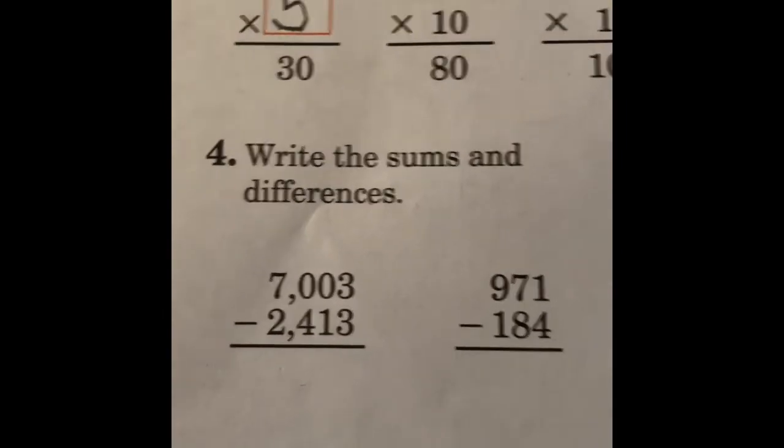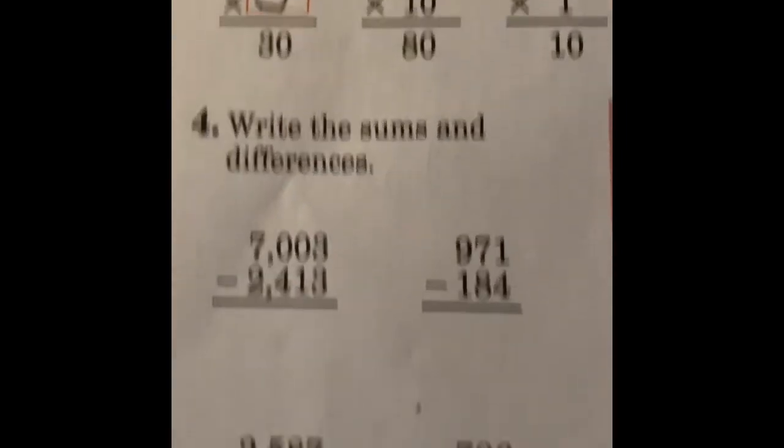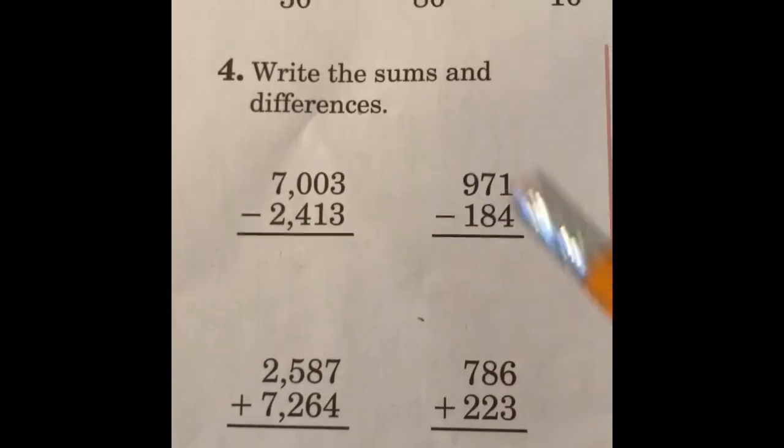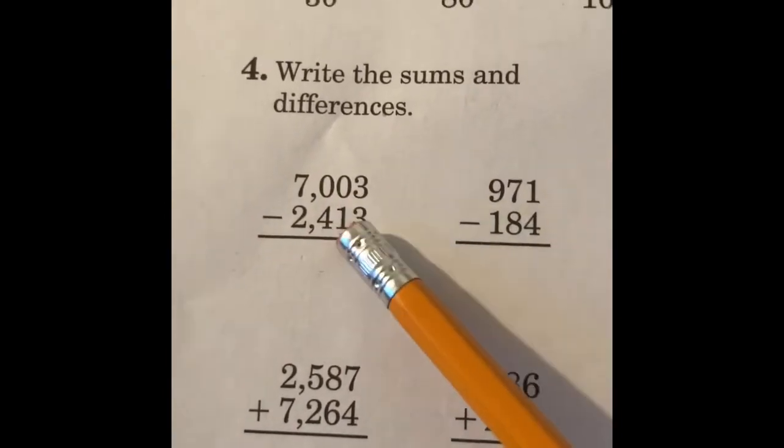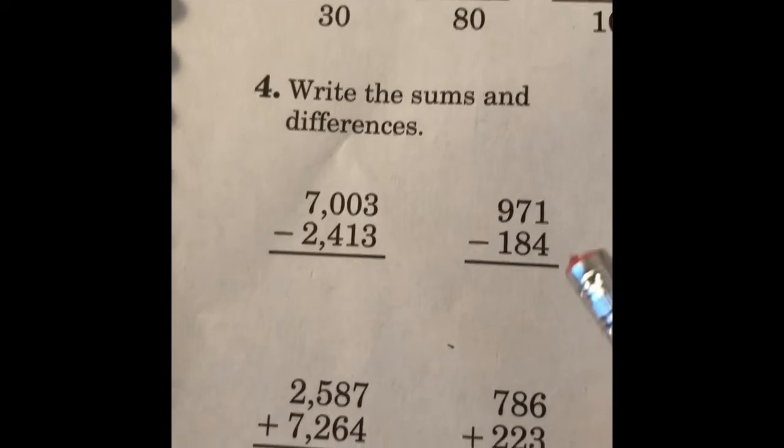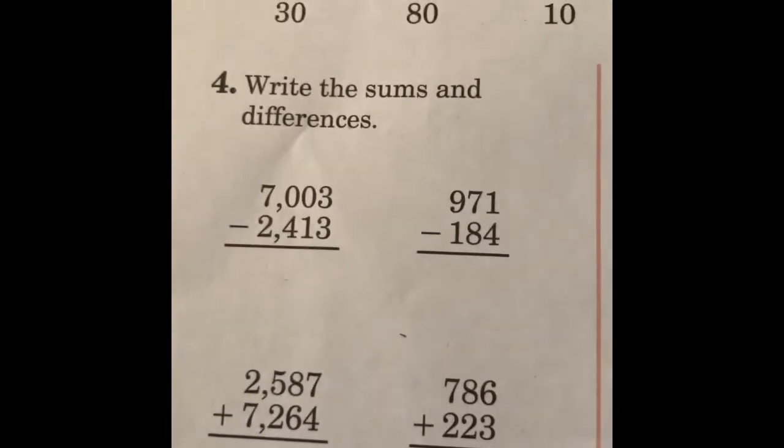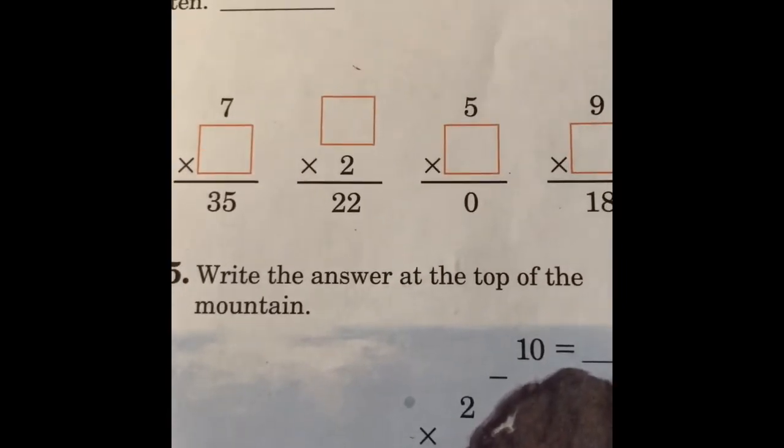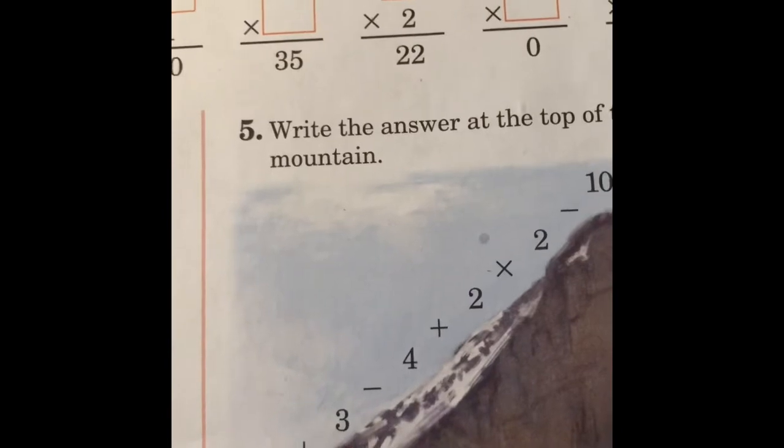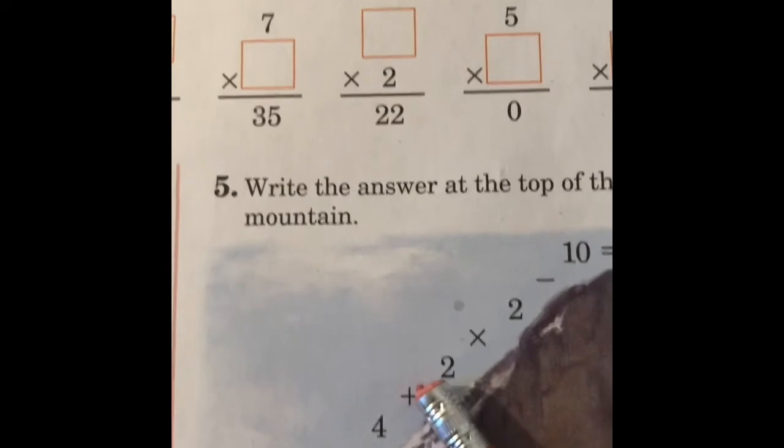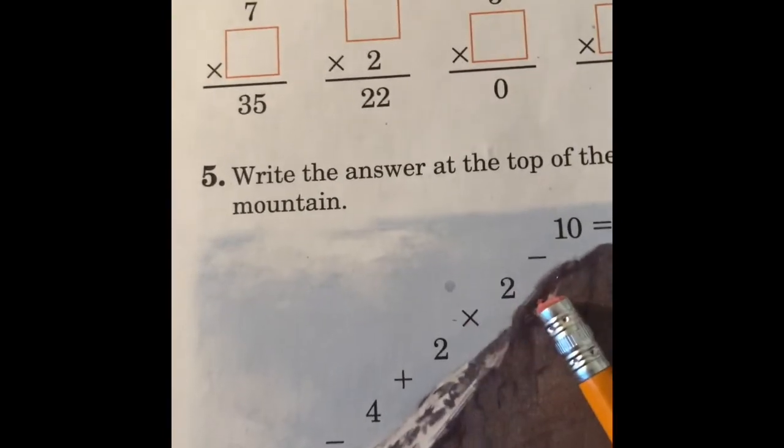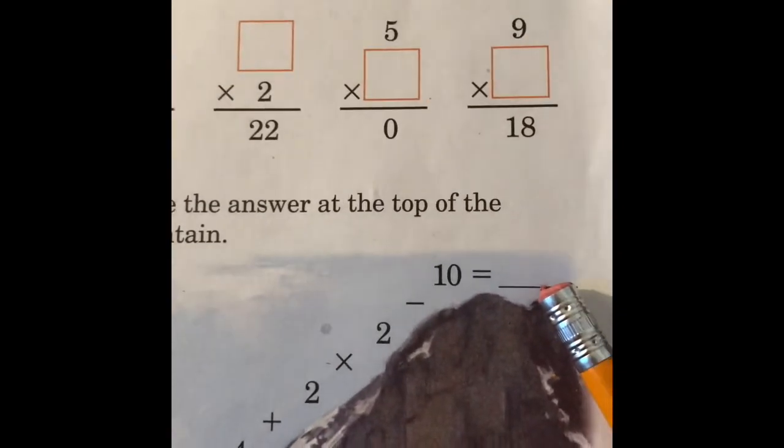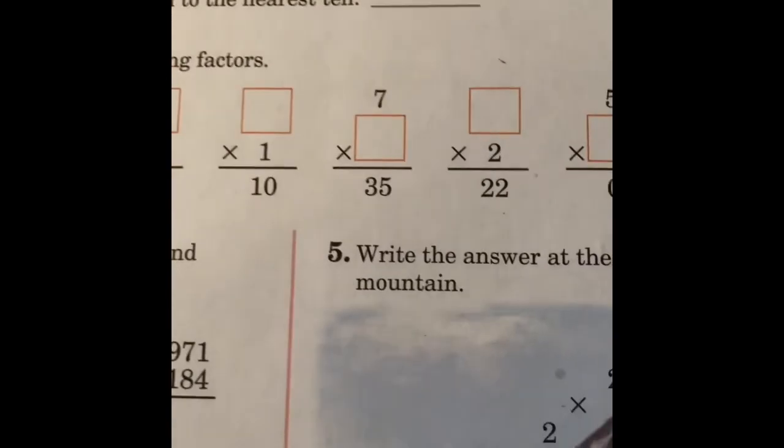Number 4. You write the sum and difference. Again, subtraction, addition. Write the answers. Remember how to do the zeros. You got to borrow. You got to cross out. Do the subtraction. Do the addition. Number 5. Write the answer at the top of the mountain. What you're going to do is you're going to add and subtract 7 plus 3. Then you're going to minus 4 plus 2. And then times 2 minus 10 equals a number at the top of the mountain. And that's all for today. Have a great day.